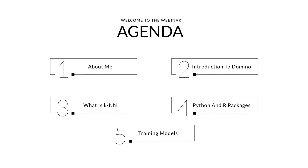At the highest level, here is the agenda. First I'll talk a little bit about me — I promise I'll keep it short. Then a brief introduction to Domino, and the meat and potatoes of this webinar: what is the k-nearest neighbors algorithm. We'll then dive into Python and R packages that implement k-nearest neighbors, and in the final section we'll show some models being trained and discuss runtime complexity.